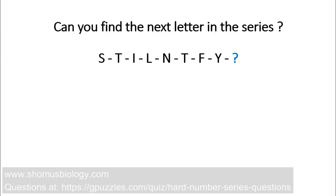Let's begin with the first question. In this case it's actually an alphabet series rather than a number series, and it's a fill-in-the-blank progression — you need to find the value indicated by the question mark. The series is: S-T-I-L-N-T-F-U. In this problem you cannot think the conventional way. We generally calculate the difference between individual alphabets by their numbers, but here you need to think out of the box. Take 10 seconds to solve it.